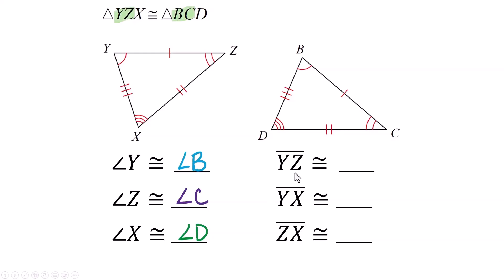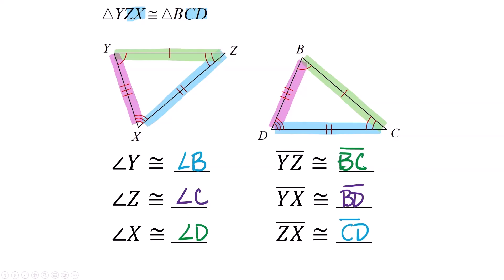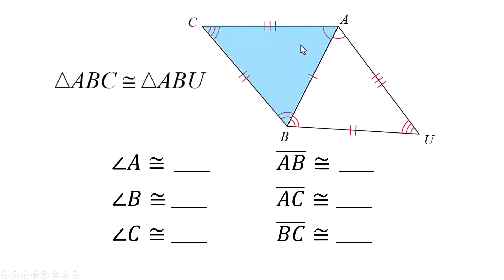For the sides: YZ has to be congruent to BC — without even looking at the diagram you can answer that, but then you look and double-check. Y to X has to go B to D — double-check in the diagram. Z to X goes to CD — write that down and double-check. It's the third side, so by process of elimination you've got that right. Sometimes diagrams feel confusing with all the markings, and if you know how to read the congruency statement, this is easier.